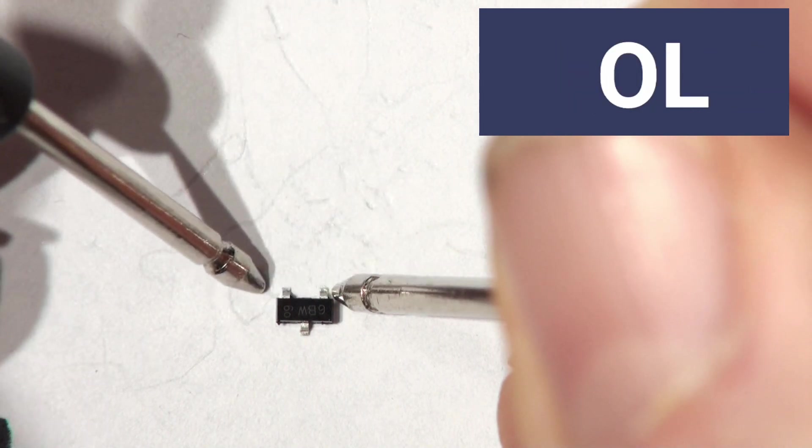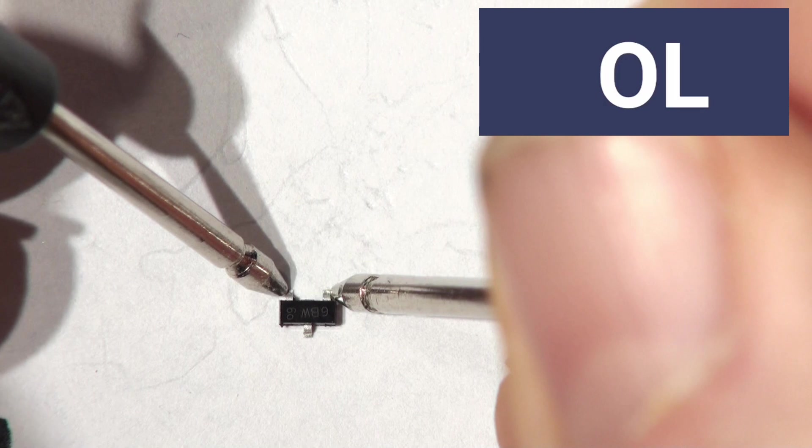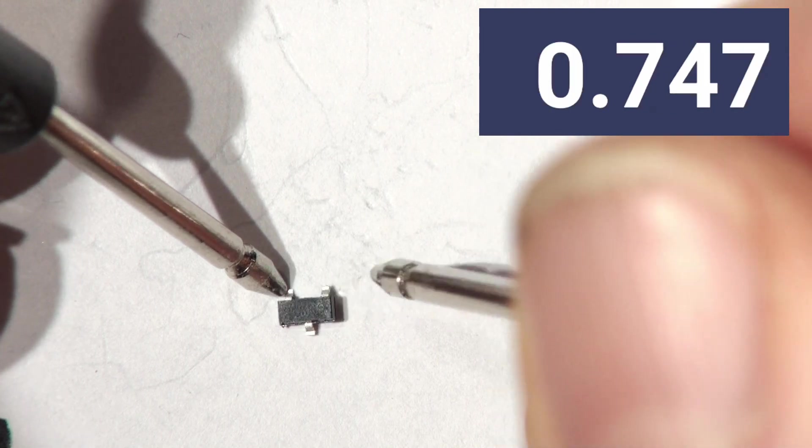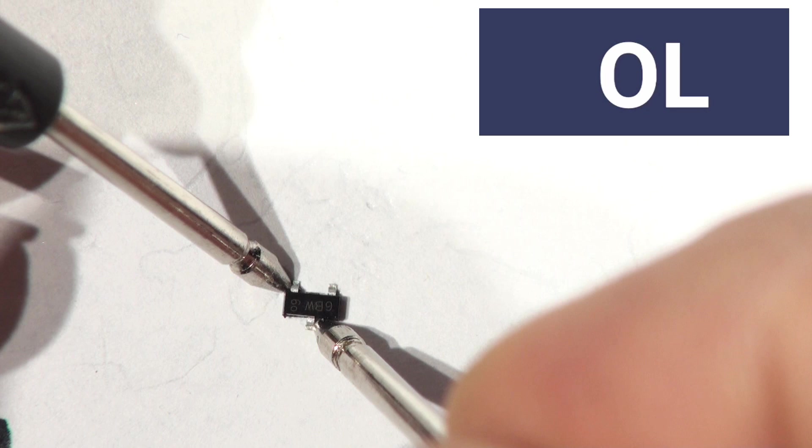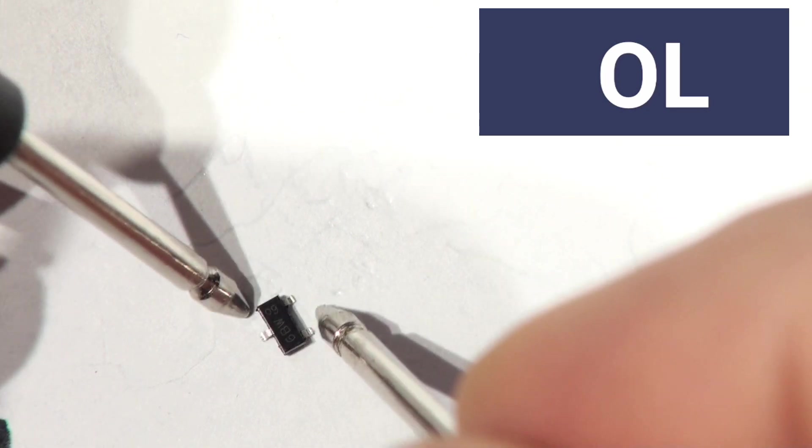So we know this is the base. We know that's the collector. That's the emitter. And if we just meter between the collector and the emitter, there should be no shorts. There should be no shorts between any of them. But you can check those two junctions.